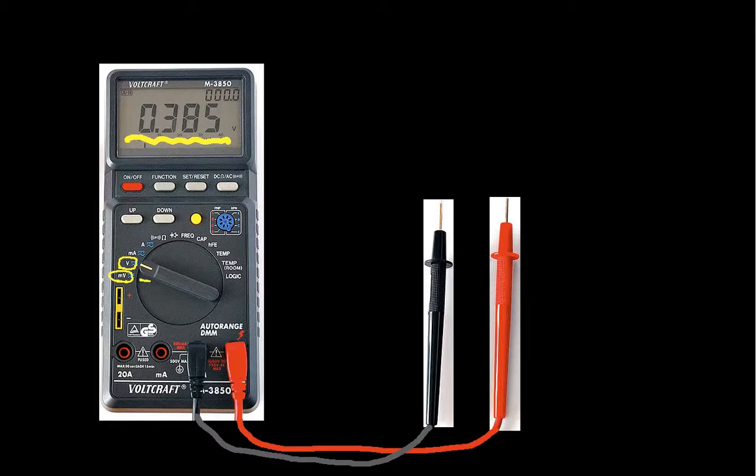This multimeter will also measure current if I point it to A, and if I want to measure current, then I need to take this lead and move it over to here. I can also measure milliamps, and again I'd have to take the red lead and move it over to here. Not all multimeters anymore require you to do this. Some of them will just have one.